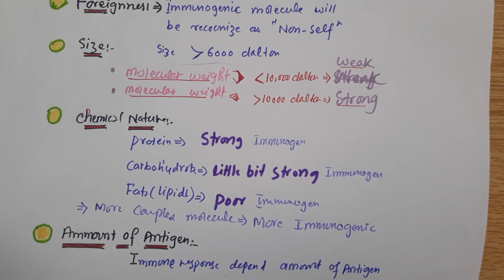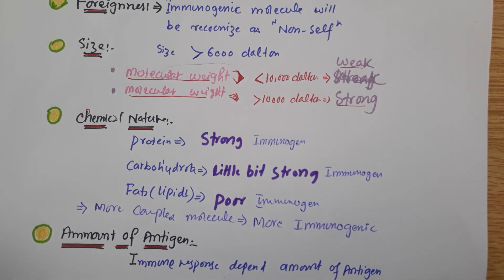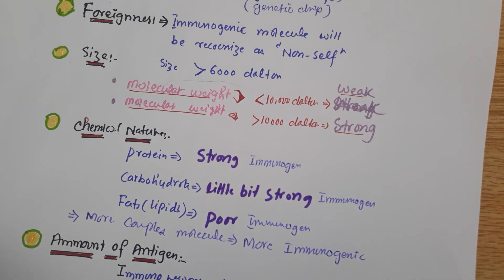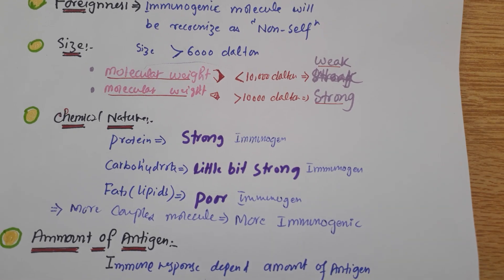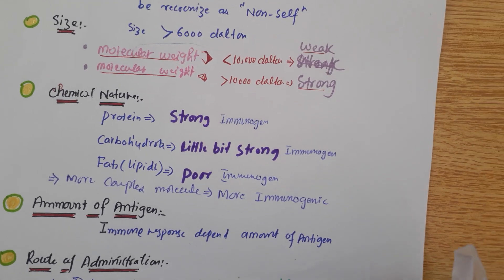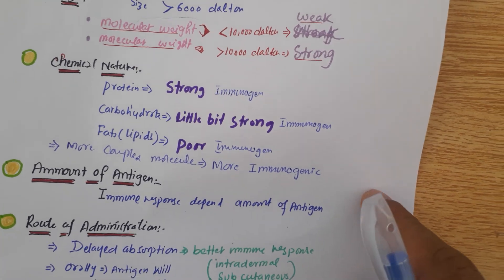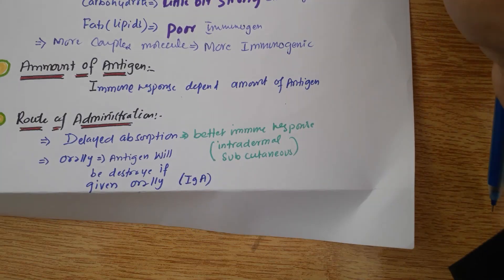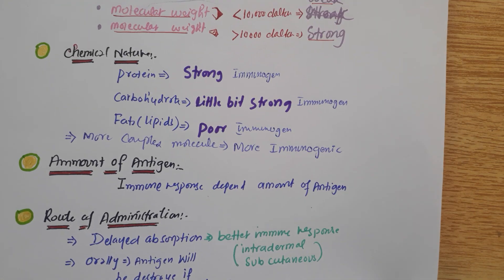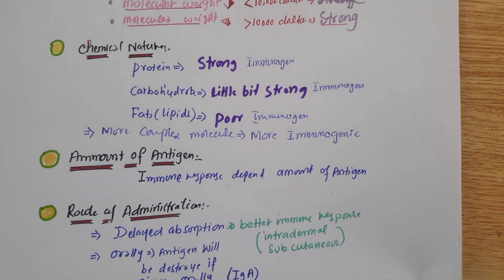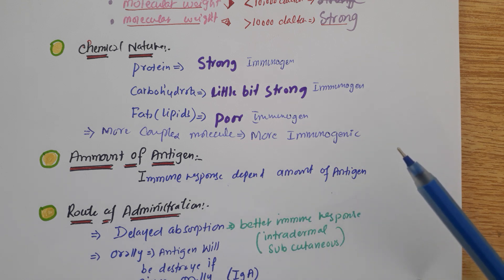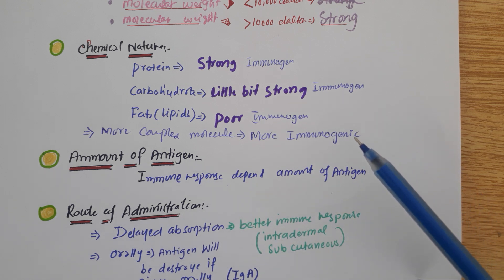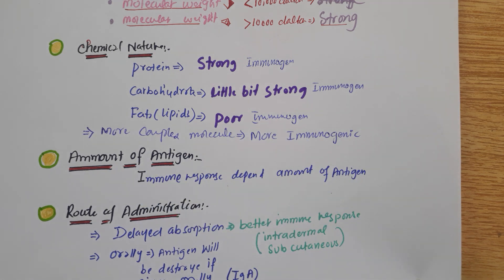If the molecule is complex, it will be more immunogenic in nature. The amount of antigen also matters — the immune response depends on the amount of antigen. If the amount of antigen is high, it will lead to activation of the immune response.